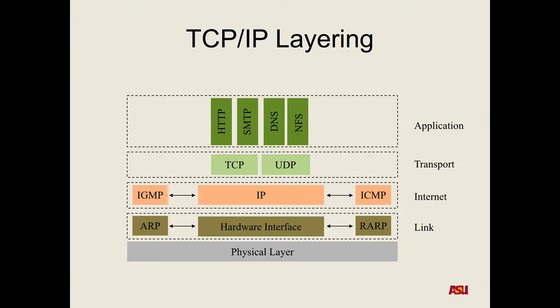It's especially important for security to understand that these aren't perfectly abstract separate layers. ARP at the link layer actually translates your hardware MAC address to an IP address, bridging a gap between those two layers. DNS at the top resolves a domain name back down to an IP address. There is intermixing between these levels, and that's why we need to study the details to understand the security implications.